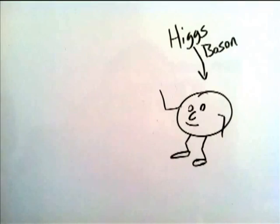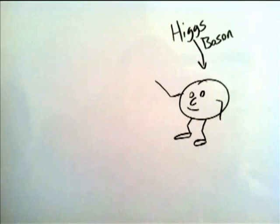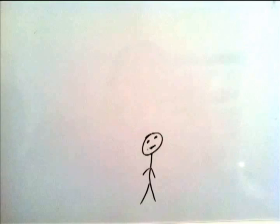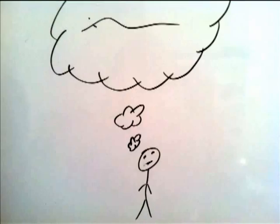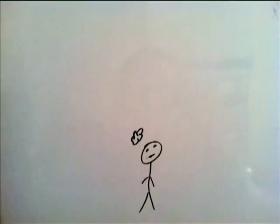The Higgs particle and its corresponding field grant mass through interaction with other particles. The more interaction a particle has with the field, the more mass it has.